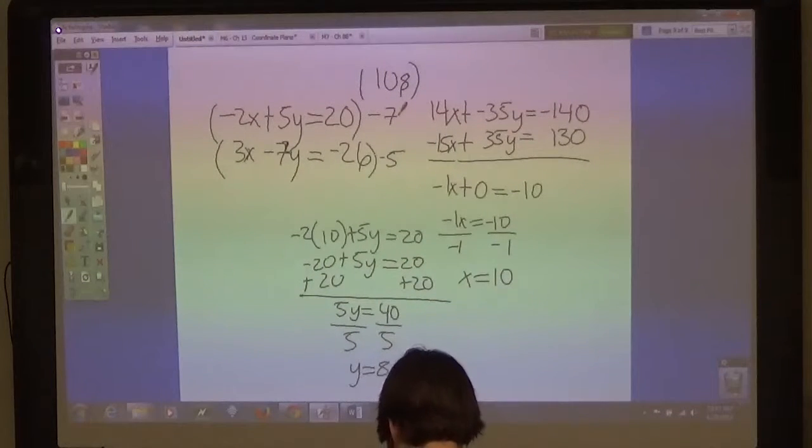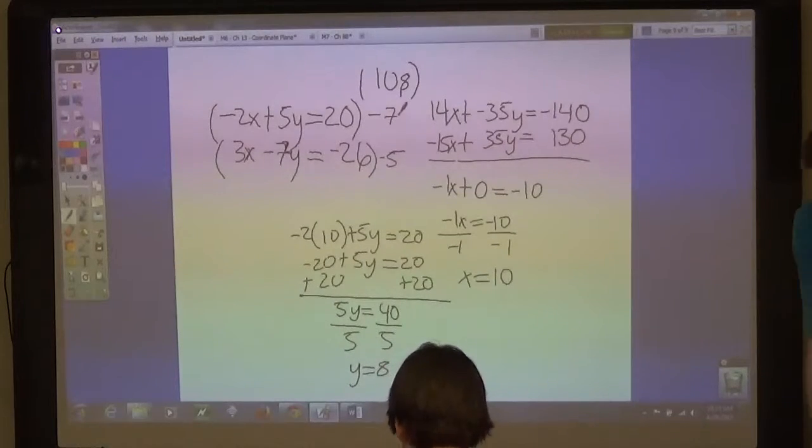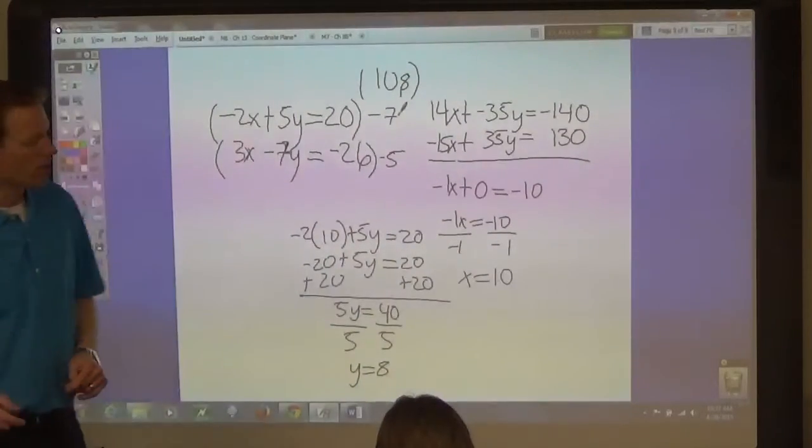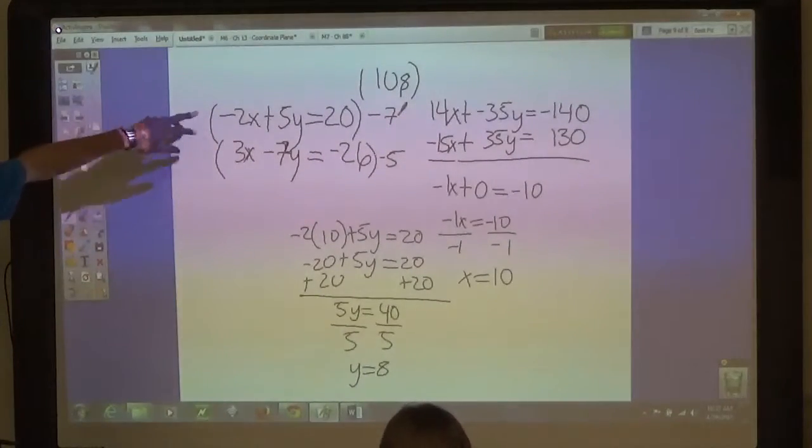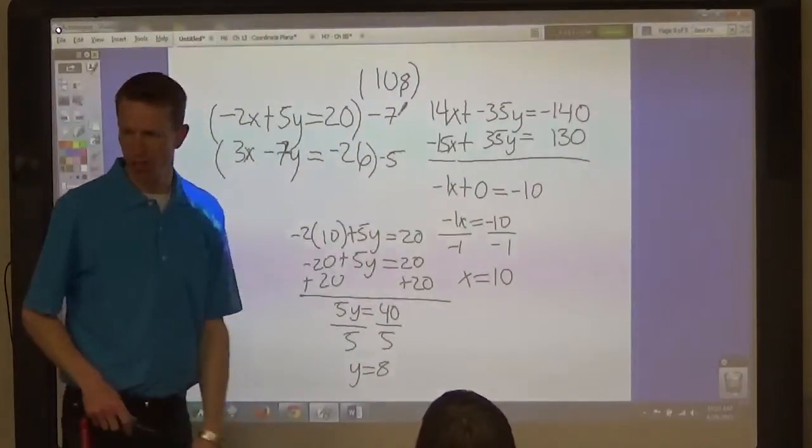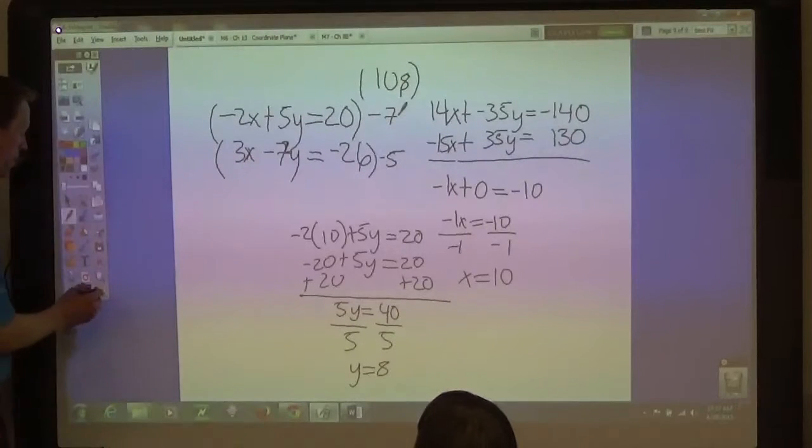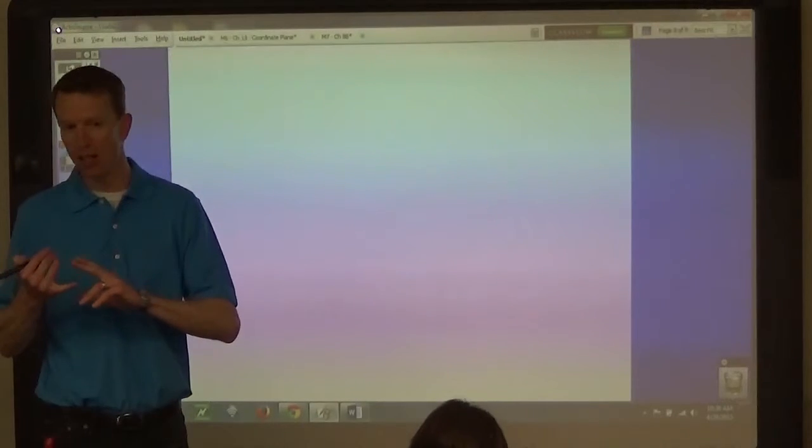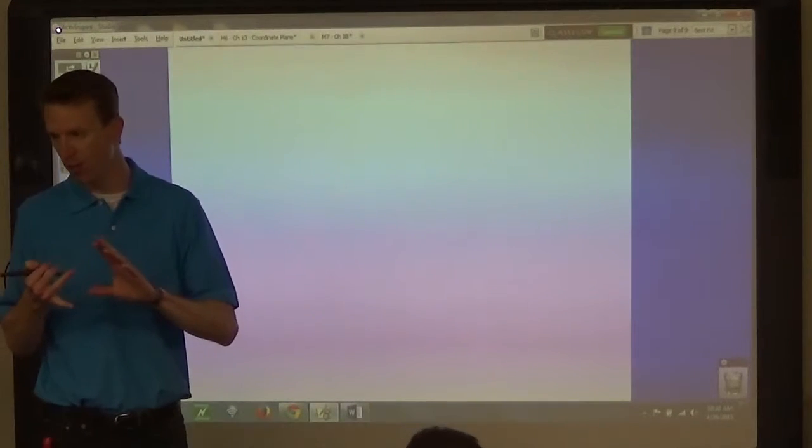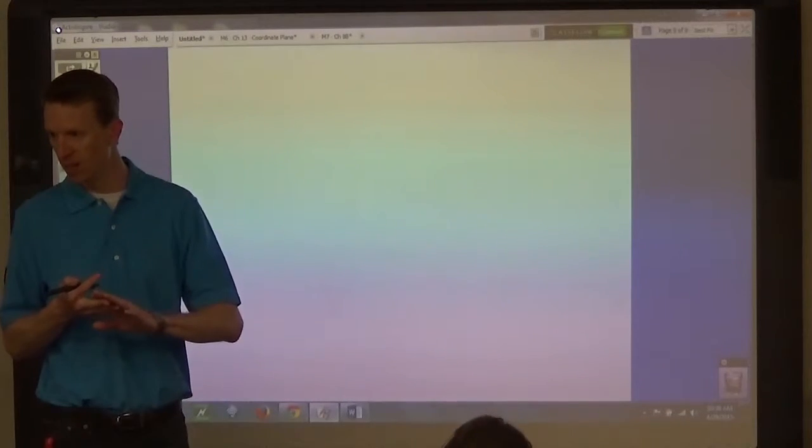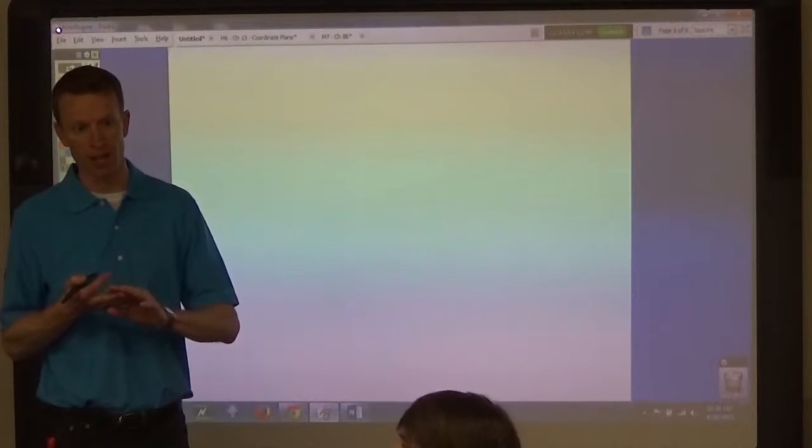All right, 8th graders. We're working on Lesson 7-3, right? Where we've been solving systems through the elimination method. Here's an example where you get opposite terms that you can add to eliminate one of the variable terms. Now, in this next section, the directions are to choose a method. So we've covered the graphing method, elimination method, and substitution method, right?